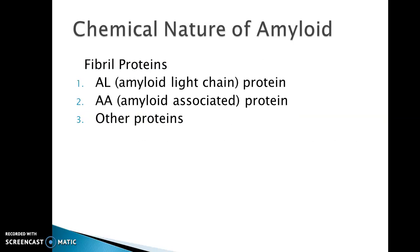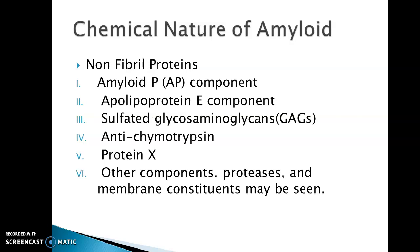Chemically, Amyloid is comprised of fibril proteins including AL amyloid light chain protein, AA amyloid associated protein, and other proteins. There are also non-fibril proteins including amyloid P (AP) component, apolipoprotein E component, sulfated glycosaminoglycans, anti-chymotrypsin, protein X, and other components.